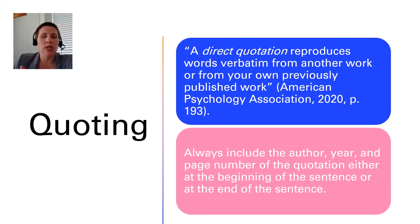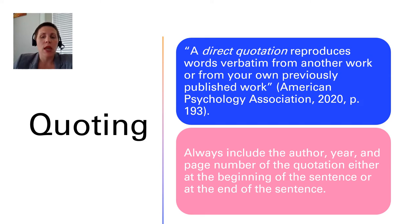Quoting is when you take a direct quotation — it reproduces words verbatim from another work or from your own previously published work. As you can see here, this is a direct quote taken from the American Psychological Association. You always want to include the author, the year, and the page number of the quotation either at the beginning or end of the sentence. In this example, it is placed at the end of the sentence.